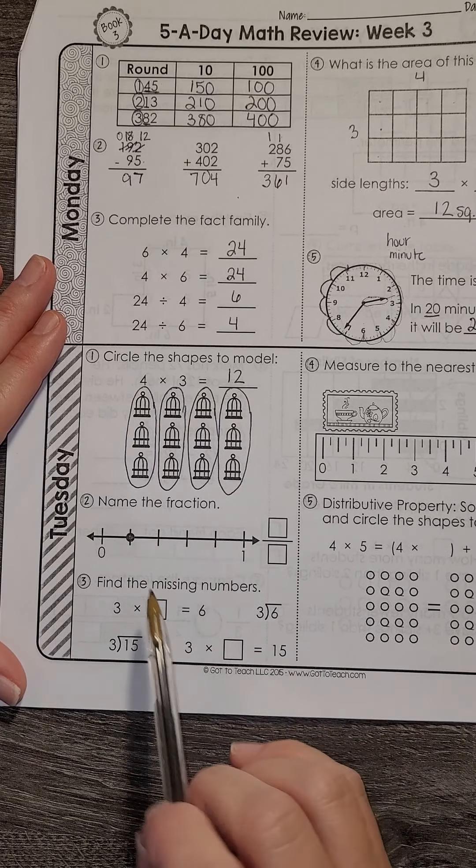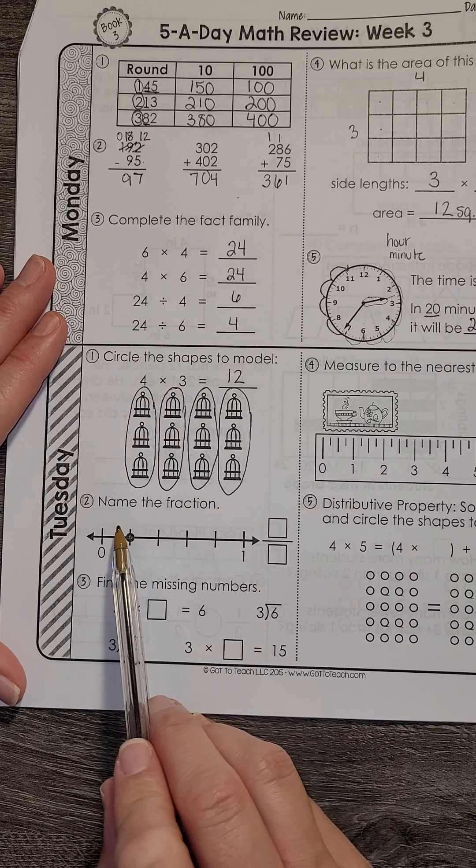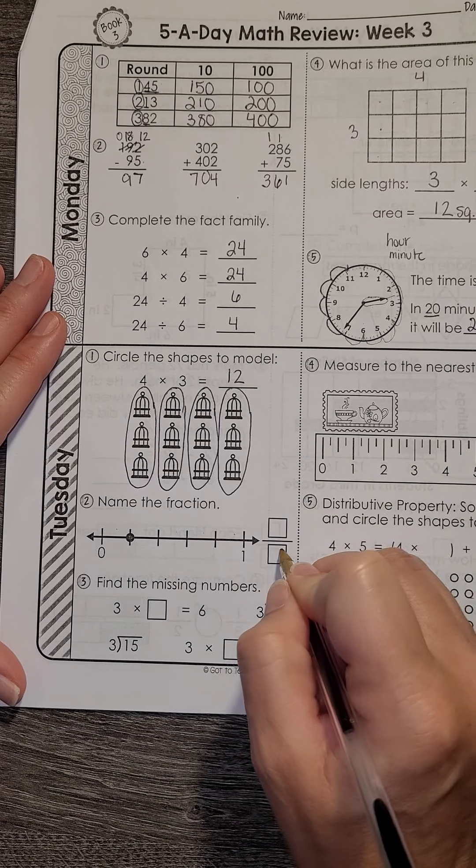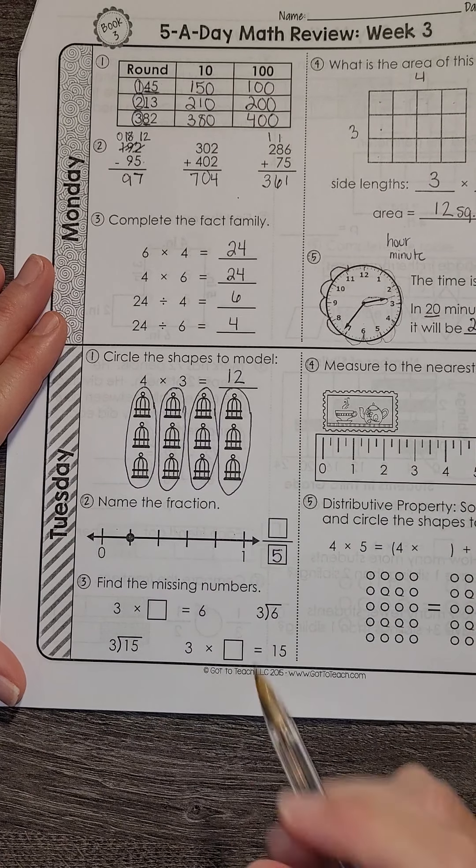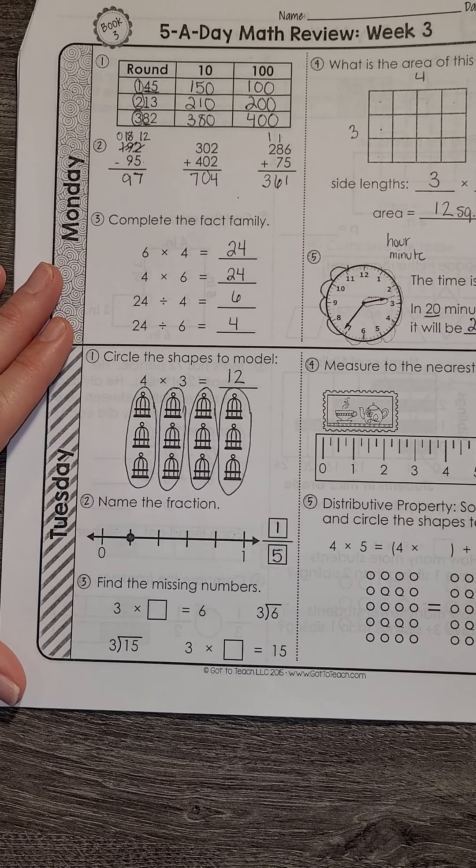For fractions, let's check our spaces to see what it's broken into. Remember, count your spaces not your line. So we have 1, 2, 3, 4, 5 spaces. So we're looking at fifths. And the dot is going one jump, so my fraction is 1 fifth.